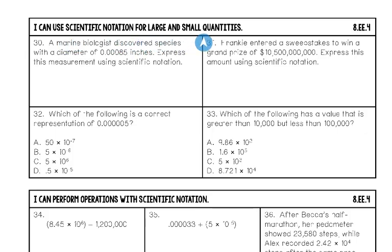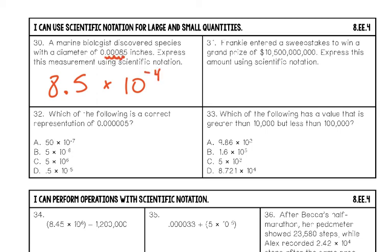Now we use scientific notation for very large and very small quantities. Number thirty: a marine biologist discovered a species with a diameter of 0.00085 inches. Express in scientific notation: put the decimal between the first two significant digits to get 8.5, then count four places moved — and since it's a small number, the exponent is negative. Final answer: 8.5 times 10 to the negative fourth.